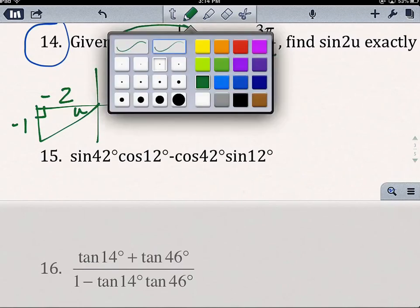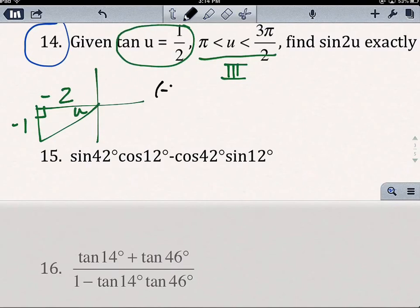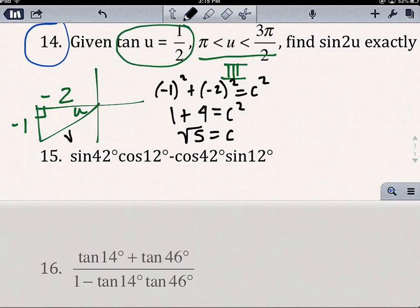So, I'm going to use Pythagorean Theorem. (-1)² + (-2)² = c². So, 1 + 4 = c². So, I end up getting that √5 is our hypotenuse.